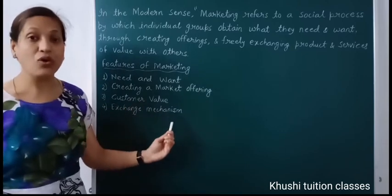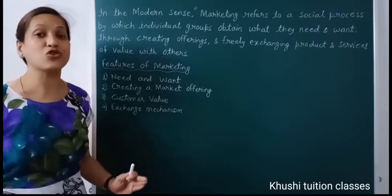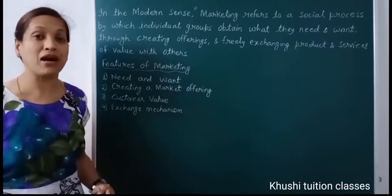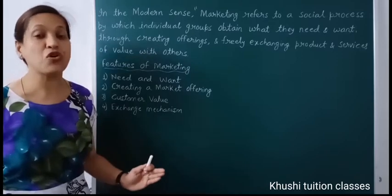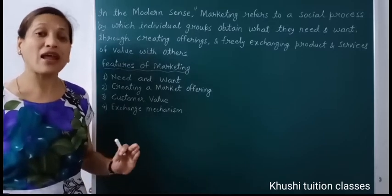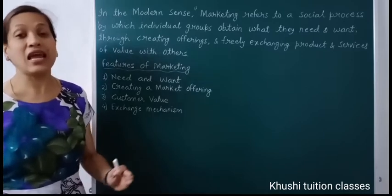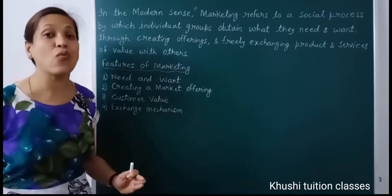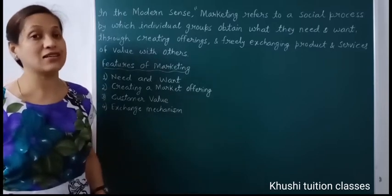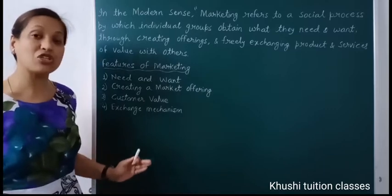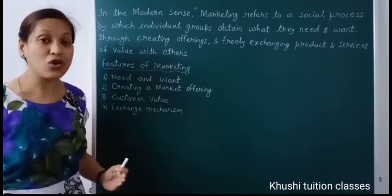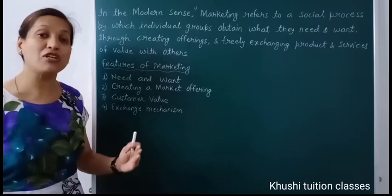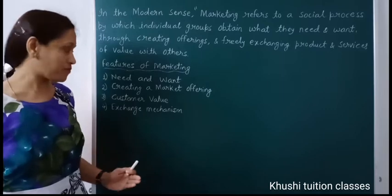The third feature is customer value. A customer always compares the benefits of a product with its cost, and purchases accordingly. As studied in microeconomics, a consumer will buy when the marginal utility of a product is more than or at least equal to its price. The customer will purchase a product or service only when the benefits received are at least equal to the price. So marketers always add values to their product so that it is better than a competitor's product, and the consumer always feels the cost is low while benefits are high.